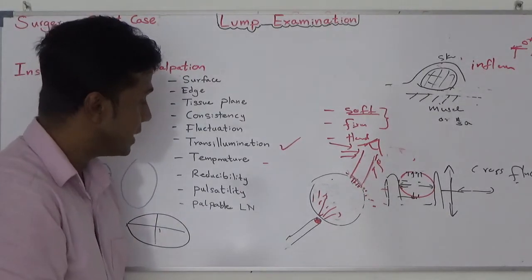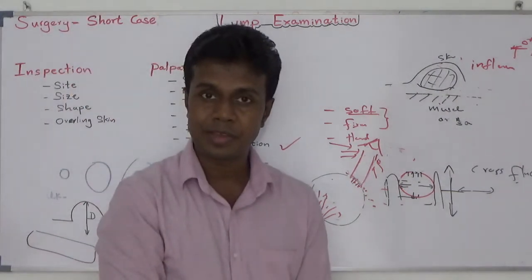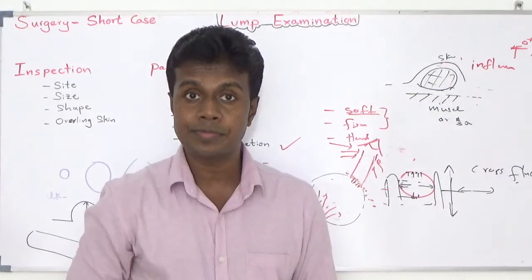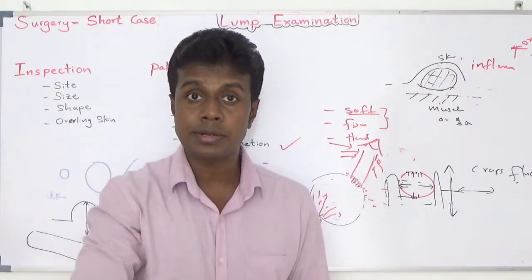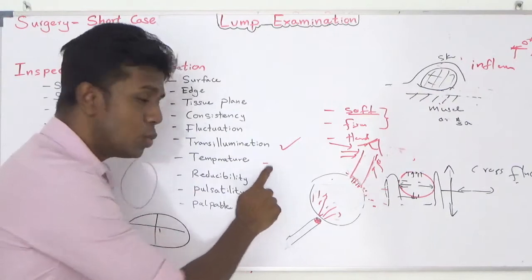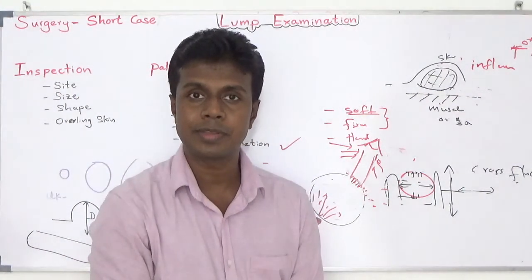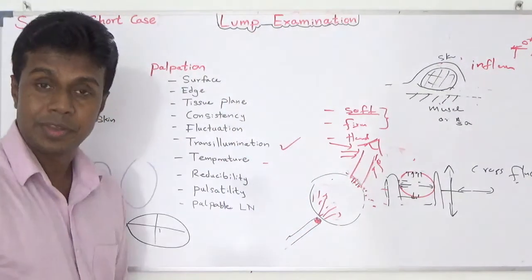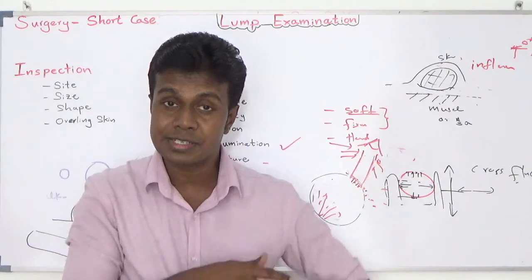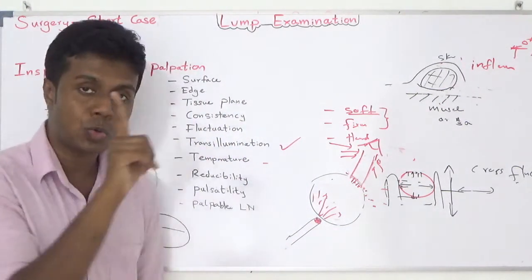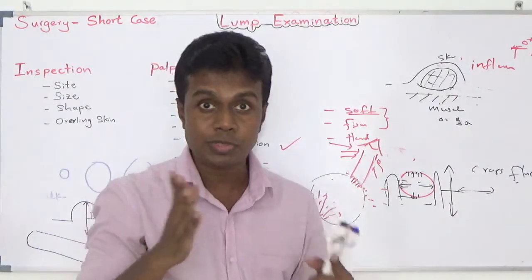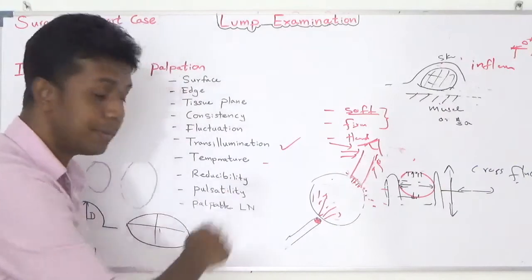Next: reducibility - whether you can reduce the size of the lump. Especially when it comes to inguinal hernia, you can push it back into the abdomen. Lipoma may not be reducible. Don't try to reduce every lump - mainly check reducibility for hernia. Hernia is the one you can most often reduce; sometimes an obstructed hernia you may not be able to reduce.